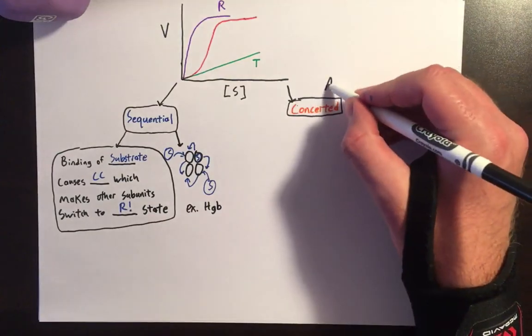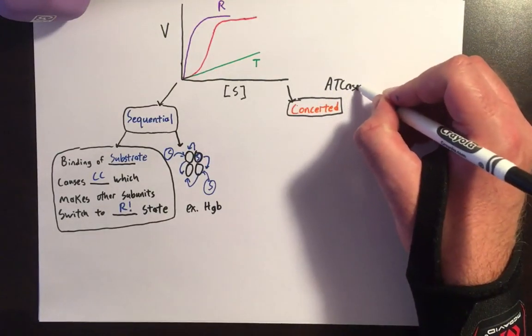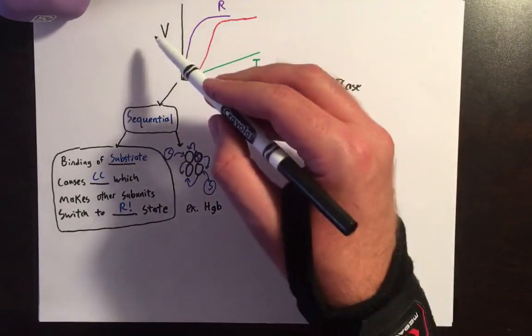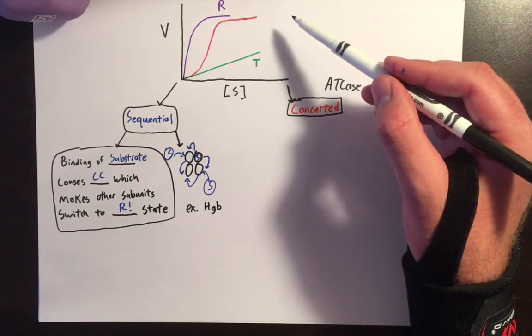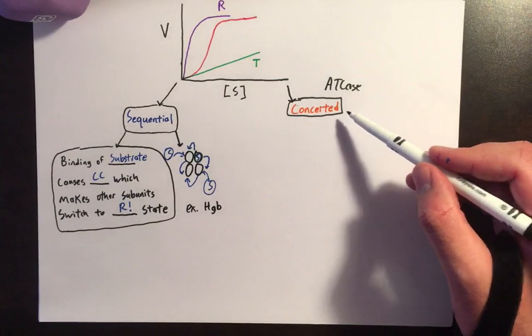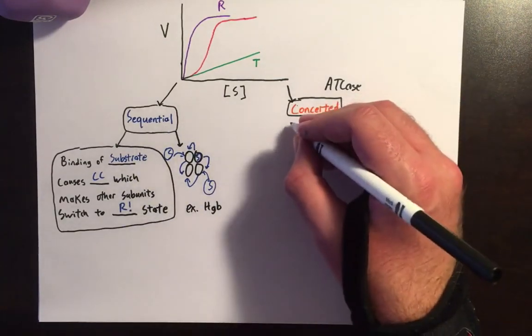For example, we'd say ATCase. If we graph the substrate concentration with the velocity, those points actually adhere more closely to the sigmoidal graph in the concerted model than they do in the sequential model. But that's kind of beside the point.